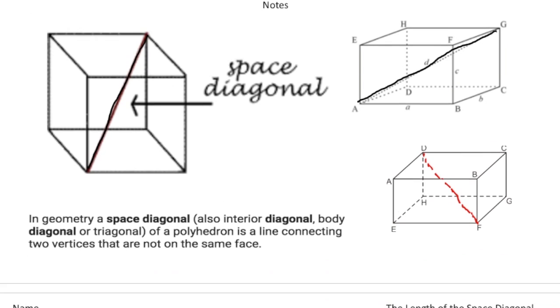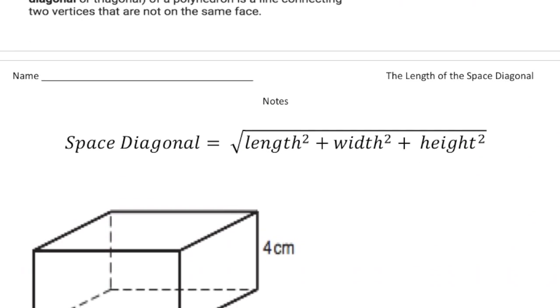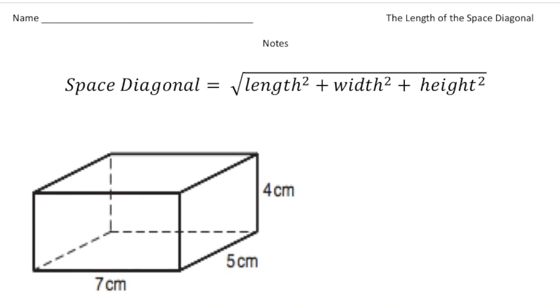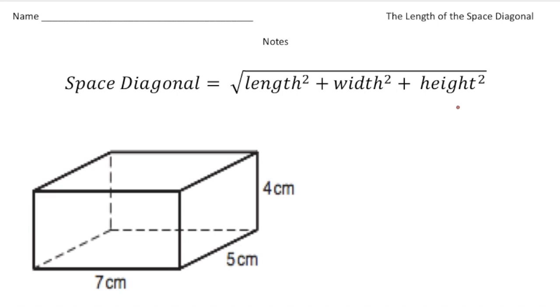So if you turn the page, there's actually a formula that you can use to determine the space diagonal. And what you do is, if you know the length, width, and height of our rectangular prism, what you do is you square the length, you square the width, and you square the height.